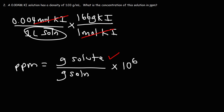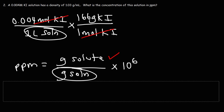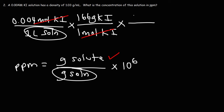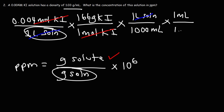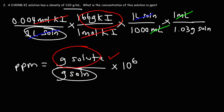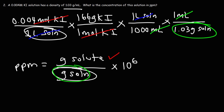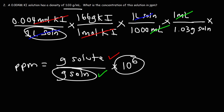We need to convert liters of solution to grams of solution using density. First, convert liters to milliliters: one liter equals 1,000 milliliters. Then, using the density, one milliliter of the solution has a mass of 1.03 grams of solution. Now we have grams of solute over grams of solution, so we multiply by 10 to the sixth.